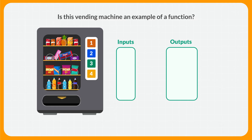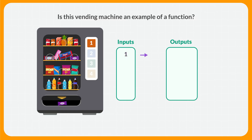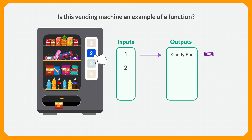Let's take a look at another vending machine together. On this machine, when the first button is pressed, a candy bar comes out. What is the input? The input is the information we put into the machine, which is the button pressed. The output is the candy bar. Next, the second button is pressed and a bag of cheesy crackers comes out. Right now we have two different inputs and they each have a unique output.